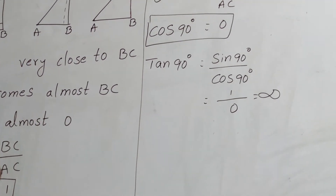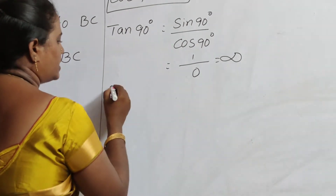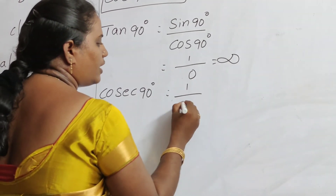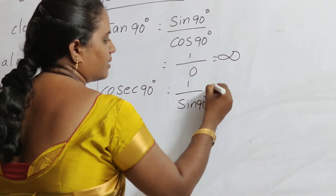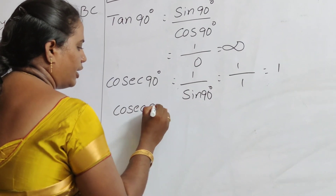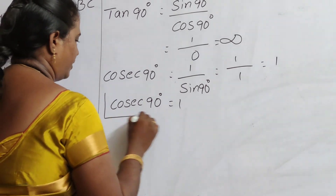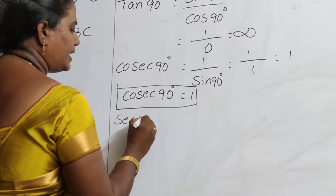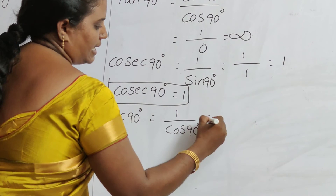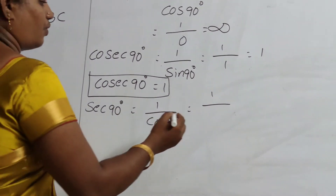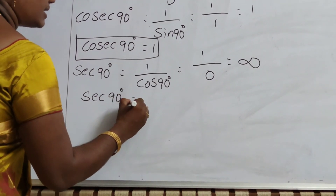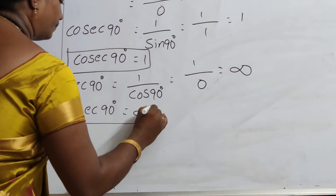By using sin, cos, and tan, find the remaining three trigonometric ratios. Cosecant 90 degrees is the multiplicative inverse of sin 90 degrees: 1 by sin 90 equals 1 by 1, so cosecant 90 equals 1. Secant 90 degrees is the multiplicative inverse of cos 90 degrees: 1 by 0, which is infinity, so secant 90 equals infinity.